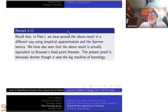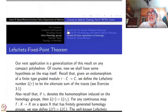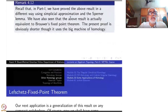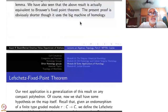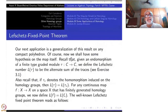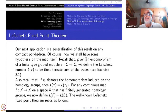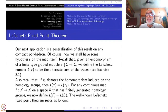Let us directly do the Lefschetz fixed point theorem. As a consequence you will also get Brouwer's fixed point theorem, so there is no need to spend any time on it separately. Our next application is a generalization of this result to any compact polyhedron. D^n is a compact polyhedron, so it will be applicable there also. On the polyhedron, only compactness is assumed, but on the map we have some additional assumption.